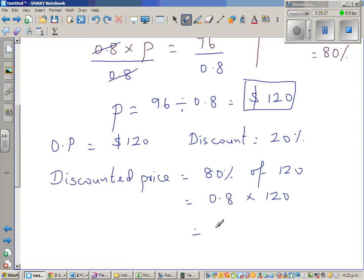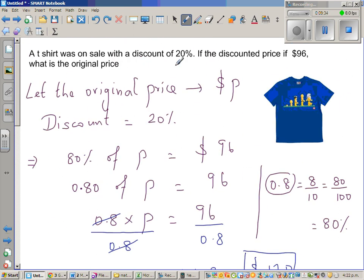So whenever you have a discount of say 30%, you're telling yourself you're paying 70%. If there's a discount of 15%, you should say you're paying 85%.